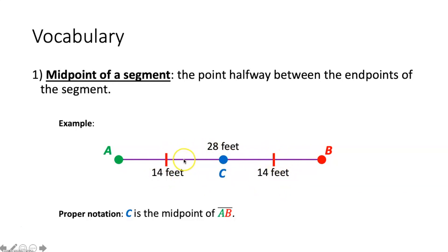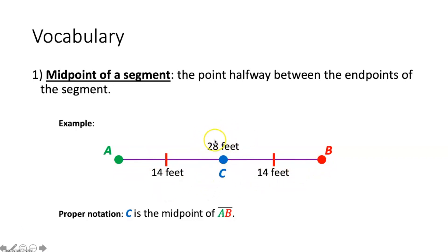You can also tell this by looking at the measures of each segment. The measure of AB is 28 feet, measure of AC is 14 feet, and the measure of CB is also 14 feet. Each of those is exactly half of the total measure, meaning that C has to be halfway in between points A and B. C is our midpoint of segment AB.